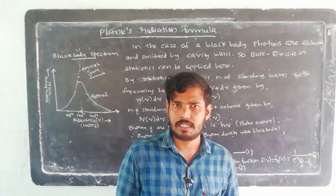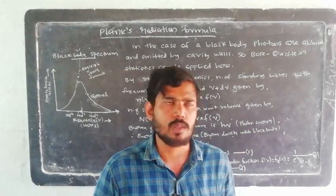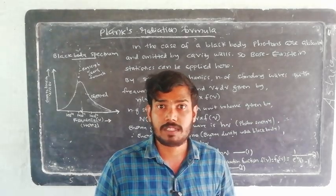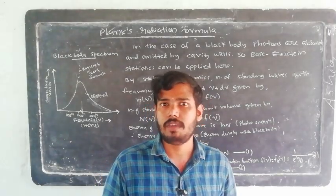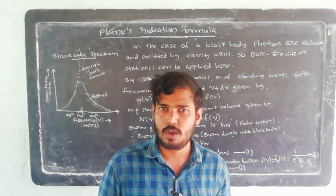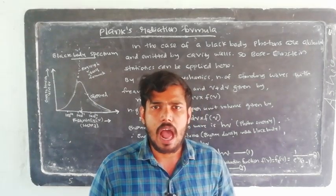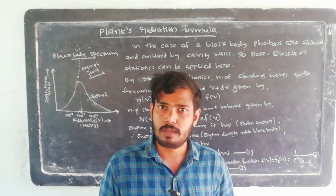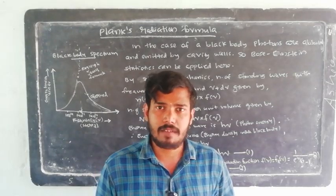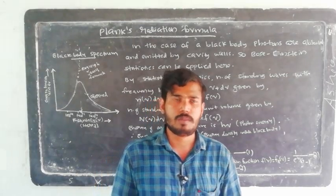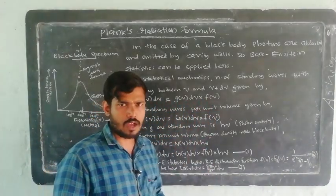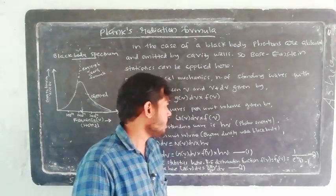F(ε) is the distribution function — the average number of particles in the energy state. The particles are standing waves in the black body. We are talking about the number of standing waves having frequency between ν and ν+dν, denoted G(ν)dν. The average number of standing waves F(ε) is F(ν). So the number of standing waves having frequency between ν and ν+dν is: N(ν)dν = G(ν)dν · F(ν). That is the key formula of statistical mechanics.